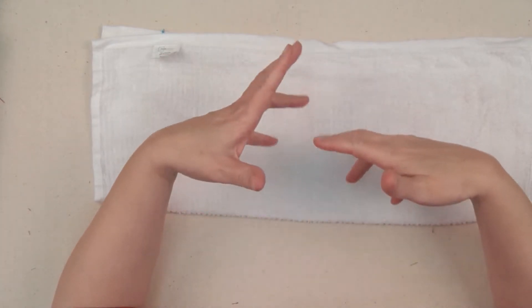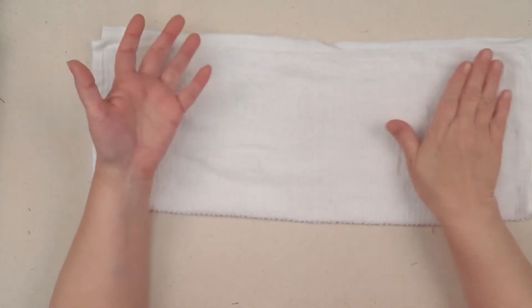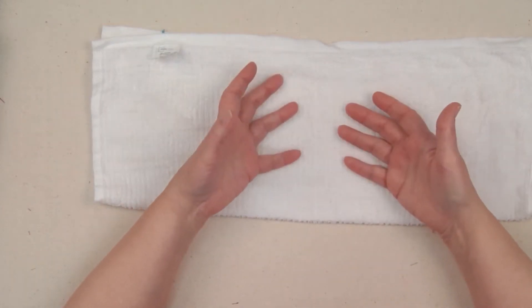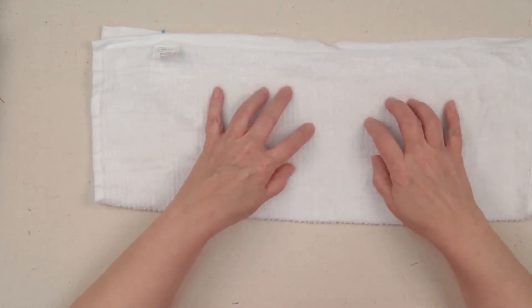In regular sewing, we would use maybe a press cloth because we want it to be really flat. Like if I'm doing machine applique and it's only a top, I will use a press cloth, not a terrycloth.